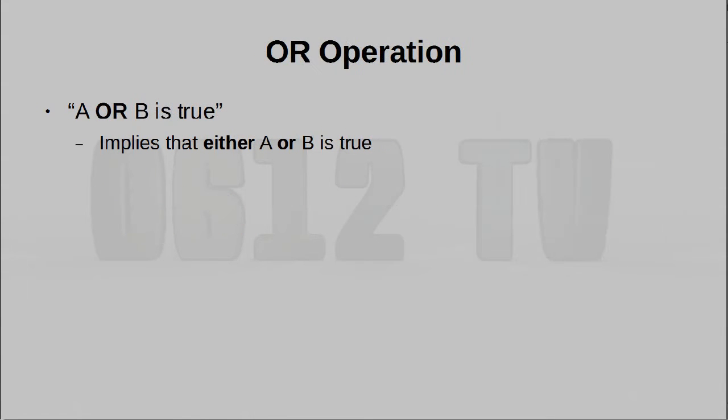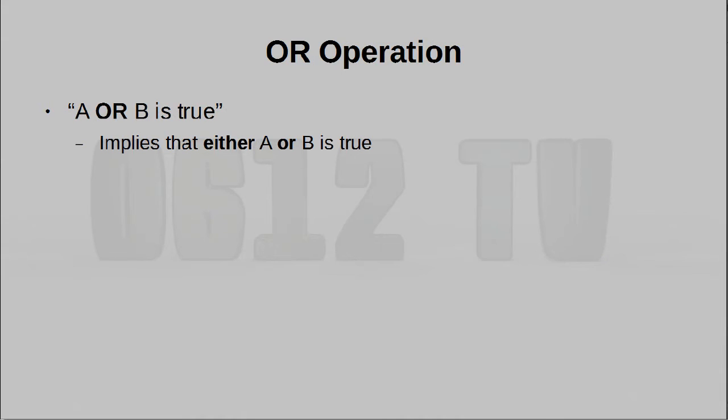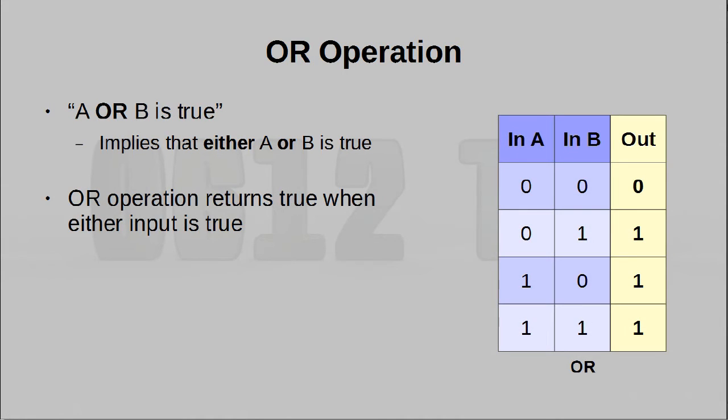On the other hand, OR does things slightly differently. If I say A is true or B is true, then this entire statement is true as long as just one of the inputs are true.